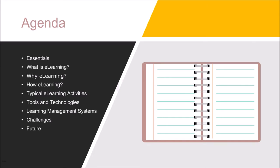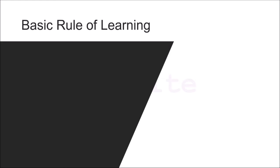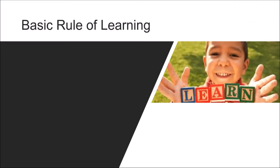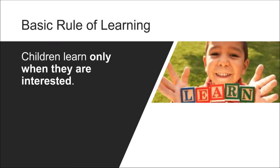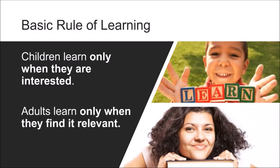Let's start with a basic rule of learning. Children learn only when they are interested. Adults, on the other hand, learn only when they find it relevant — which is why adult education is more about specialization. When teaching a child, you use lots of colors and creativity, but when teaching an adult, you get very focused on what they want to learn. Adults have the tendency around WIFM — what's in it for me.